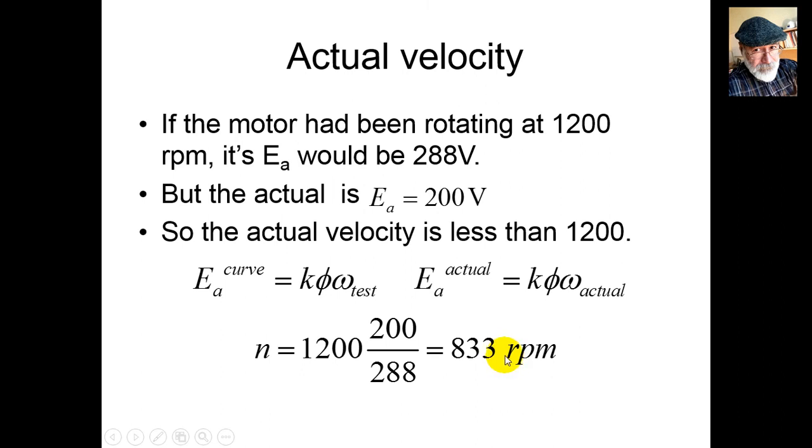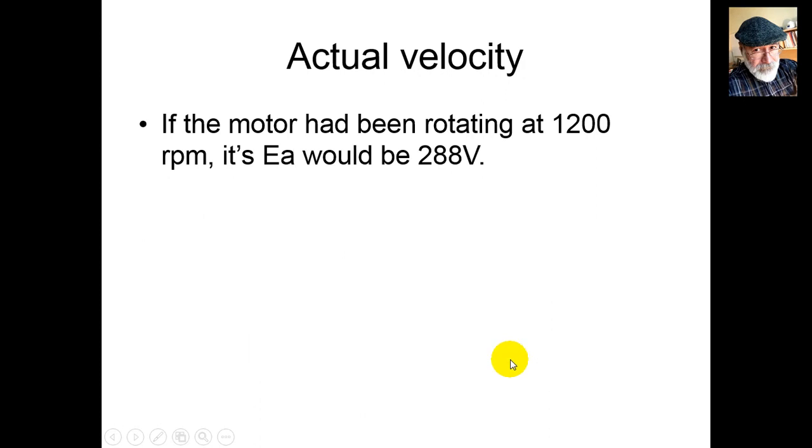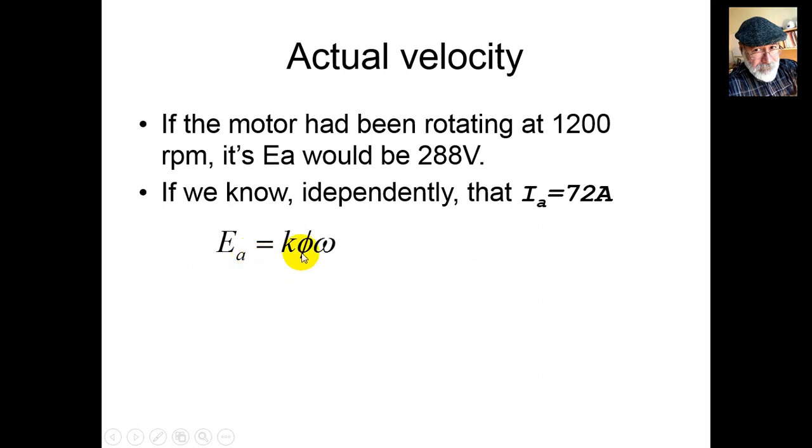That's part one. Let's extend the problem. If the motor had been rotating at 1200 RPM, its Ea would be 288 volts. Now suppose we measure independently that the armature current Ia is 72 amps.